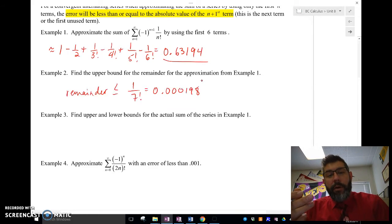And 1 over 7 factorial calculates out to 0.000198. So this is our upper bound for the remainder for our approximation. This is our error.